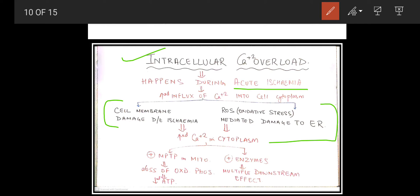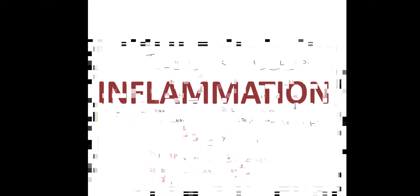When the membranes are damaged, excess calcium is released into the cytoplasm from organelles, and additionally calcium influx occurs from outside due to plasma membrane damage. The ultimate result is increased calcium in the cytoplasm. This increased calcium stimulates the MPTP — mitochondrial permeability transition pore — causing loss of membrane potential, loss of oxidative phosphorylation, and reduced ATP production. It also stimulates a number of enzymes with multiple downstream effects.